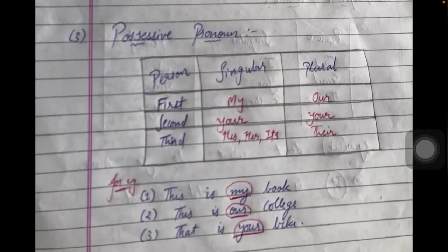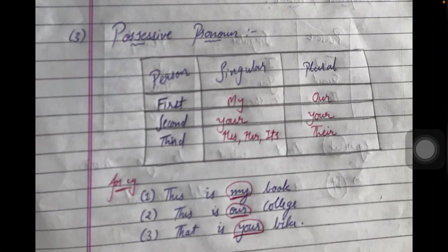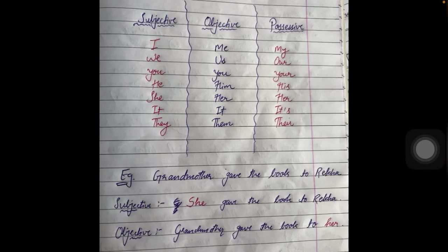The last category is possessive pronoun. A possessive pronoun is used to show ownership or attachment to something. Examples are: my, your, his, her, its, our, your, their. For instance, 'This is my book' — here we have ownership over the book, so we use the possessive pronoun 'my.' Similarly: 'This is our school,' 'That is your table,' 'This is your cycle.'